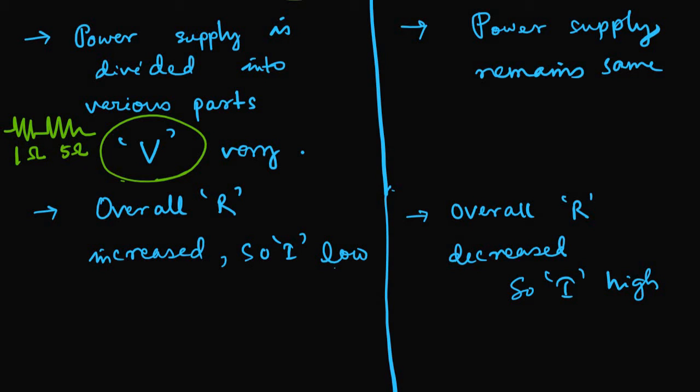But in parallel combination always the power supply remains the same and that's why it is useful in domestic wiring. In domestic wiring the power supply in each of the individual switch everywhere as it is combined in parallel the total V remains the same. We studied in the previous class also you can follow that up.